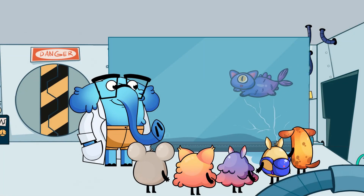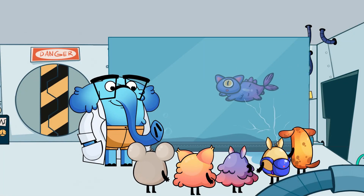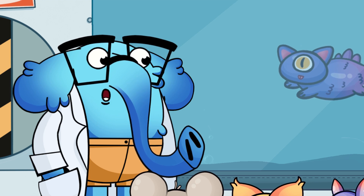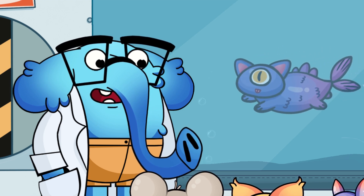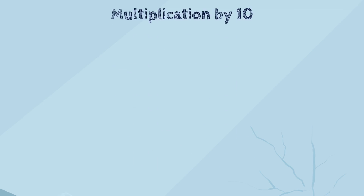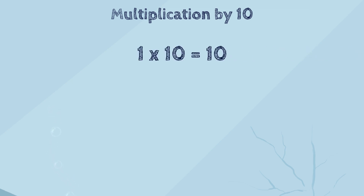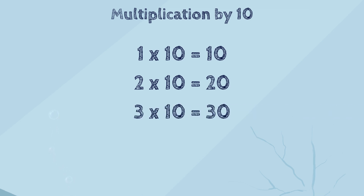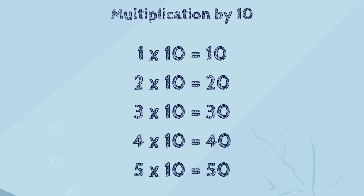Hello, kids! Good morning, professor! Today, we'll learn some tricks using multiplication by ten and five. Let's start with multiplication by ten and look at some examples. We know that one times ten is ten, two times ten is twenty, three times ten is thirty, four times ten is forty, and five times ten is fifty.